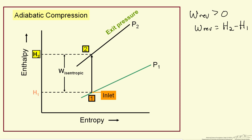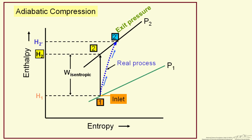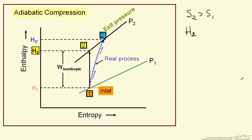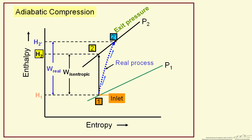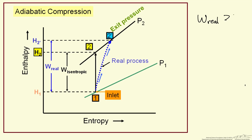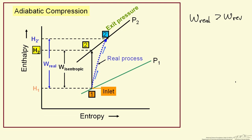Now I want to compare this to an irreversible process, which corresponds to a real process. Here I am showing, in blue, a real process. The entropy increases, so S2 is greater than S1. We are going to the same pressure, but notice that at a constant pressure line, the enthalpy is higher. So enthalpy two for the irreversible process is greater than enthalpy two for the reversible process. We are at a higher temperature and higher enthalpy, and the same pressure corresponds to a higher temperature. The work for the real irreversible process is greater than the work for the reversible process.